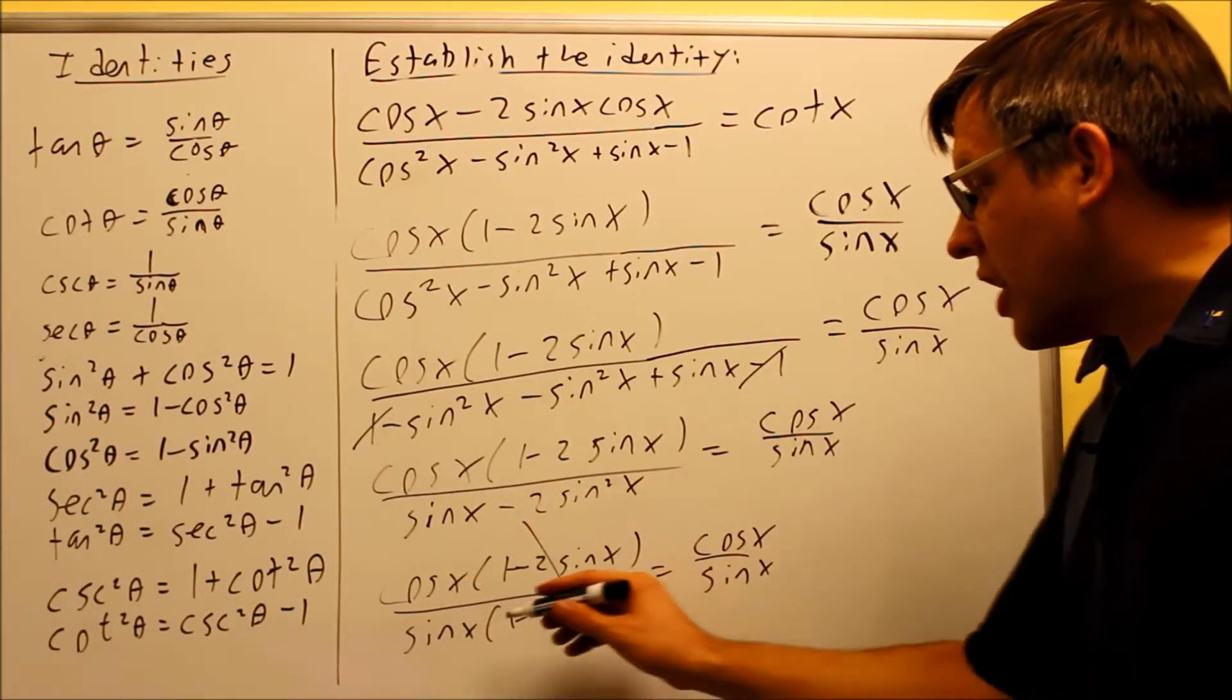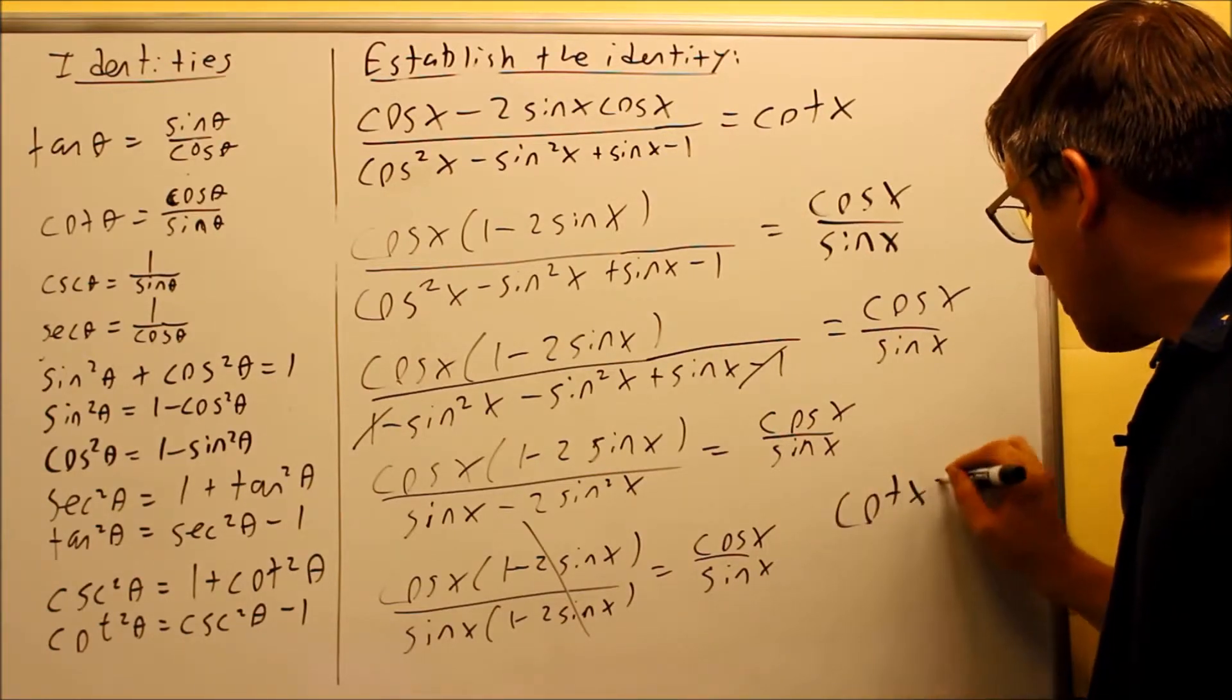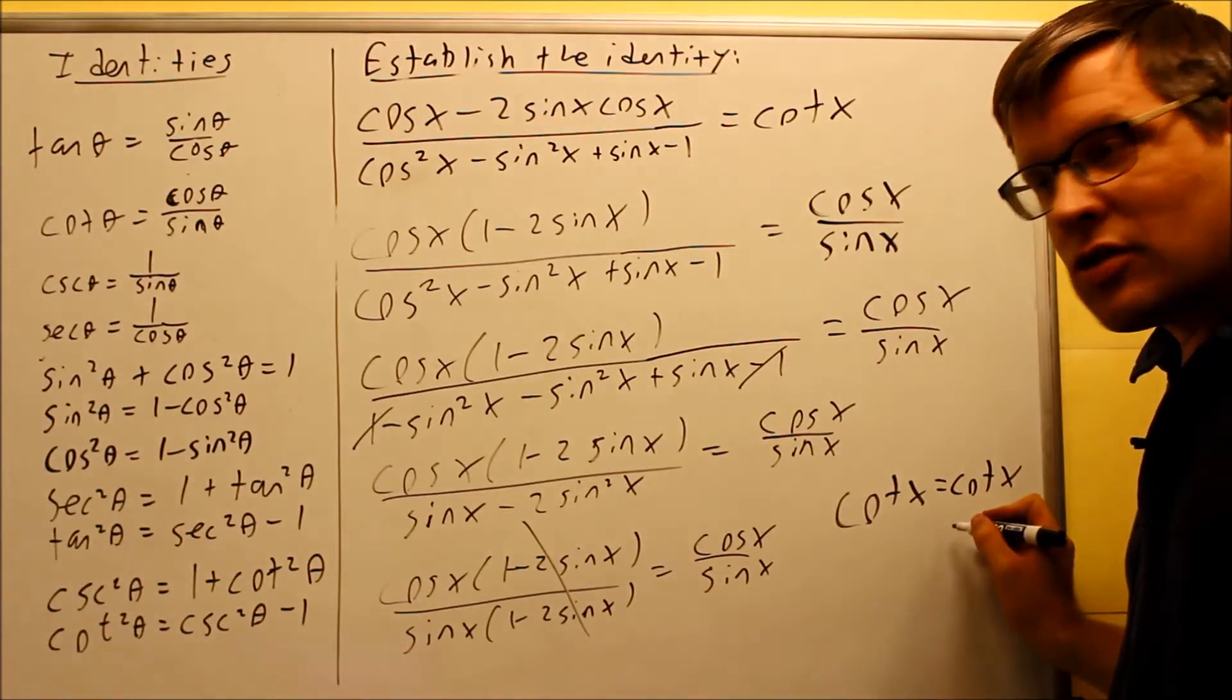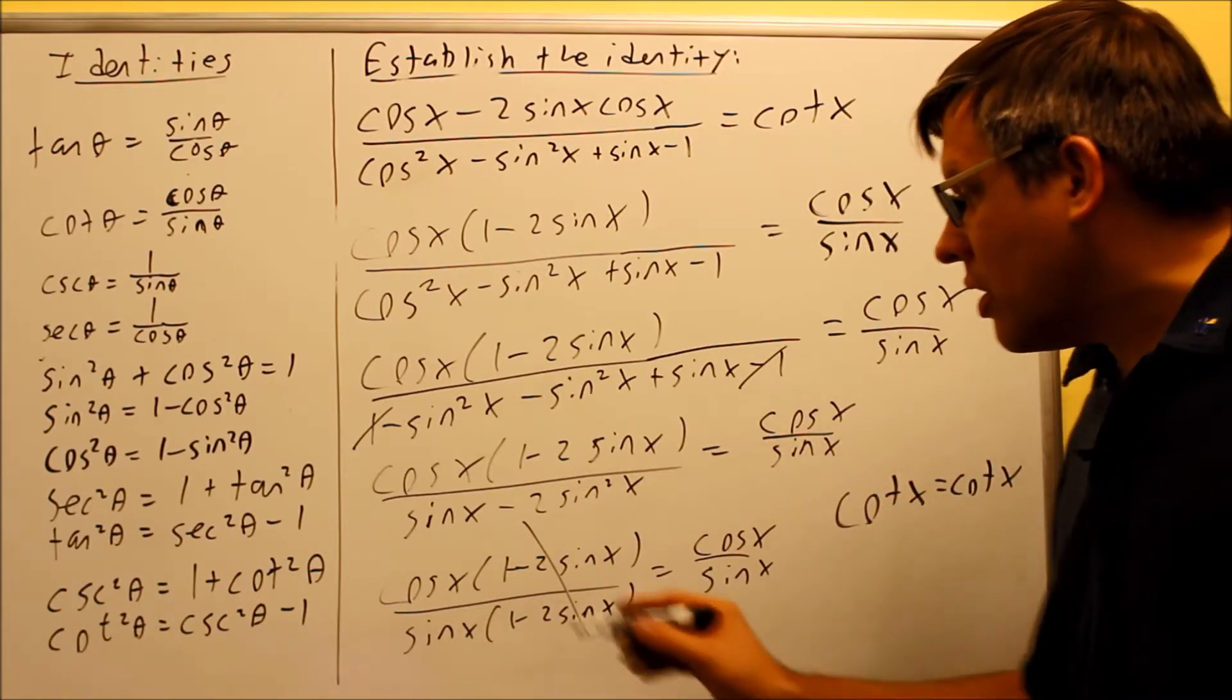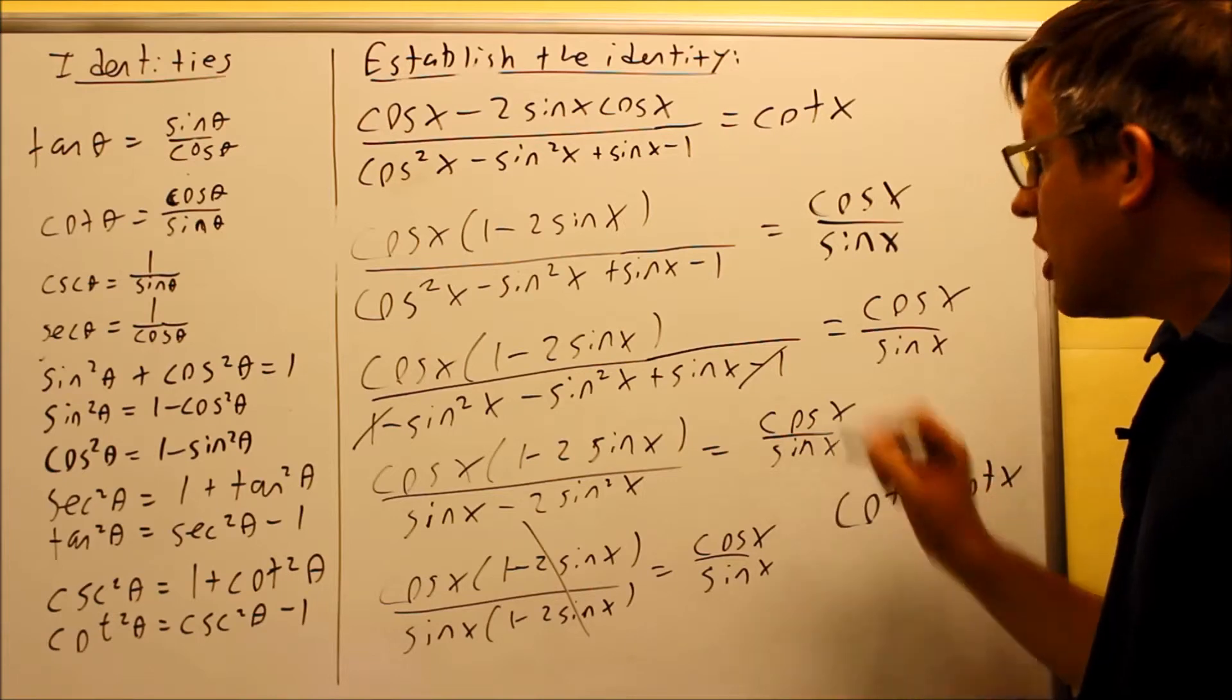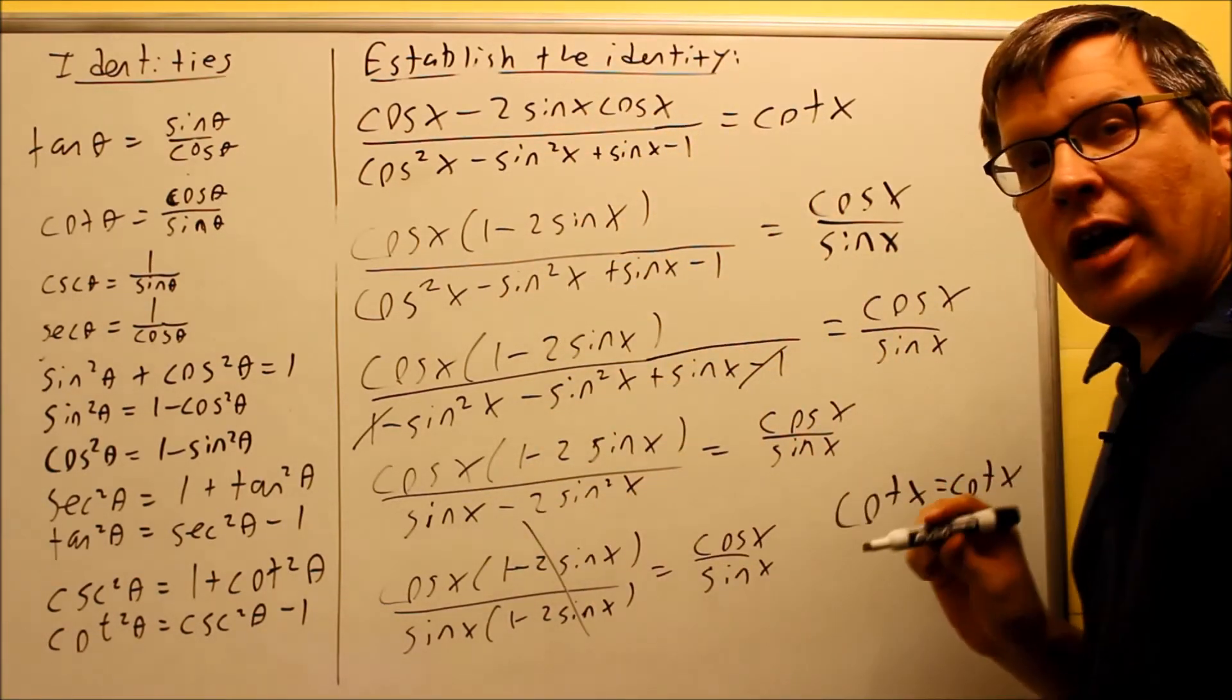Now if you want to put cosine x over sine x equals cosine x over sine x, you can. Or your final step could actually be this one. You could put cotangent x equals cotangent x. It doesn't really matter what exactly it is on both sides of the equation. The most important thing is that you've shown that both sides are equal. So as long as you have both sides are equal and you show logically how you got to that point, that's all that really matters.